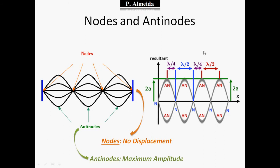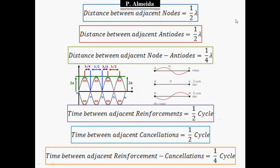The distance between nodes and the distance between antinodes is half of a wavelength. Because I go from antinodes to nodes to antinodes and so on, the distance between an antinode and a node will be the wavelength divided by 4 — a fourth of the wavelength. So, the distance between adjacent nodes will be one half of a wavelength. Adjacent means the closest nodes together.